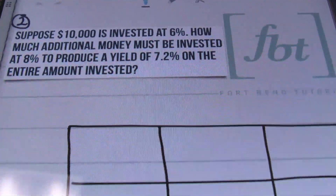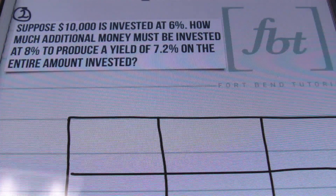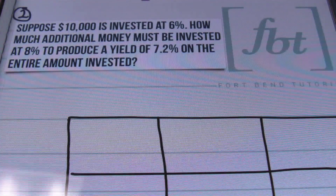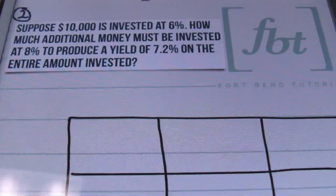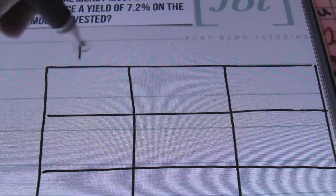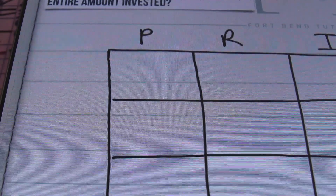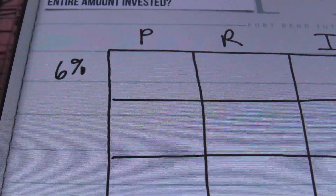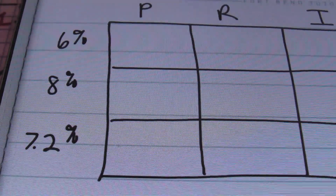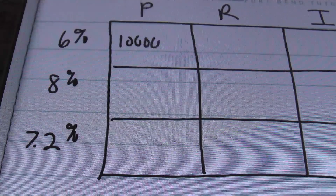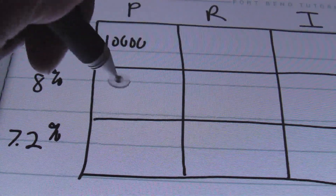In problem number two, it says: suppose $10,000 is invested at 6%. How much additional money must be invested at 8% to produce a yield of 7.2% on the entire amount invested? Once again, we'll use the simple interest formula. Principal times rate equals interest. My first investment is at 6%, I'm adding money at 8%, and I want the overall result to be equivalent to a 7.2% investment.